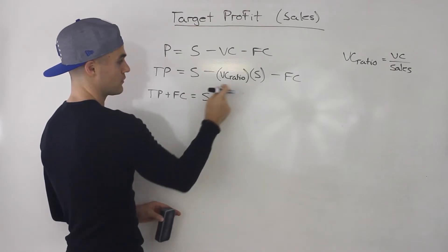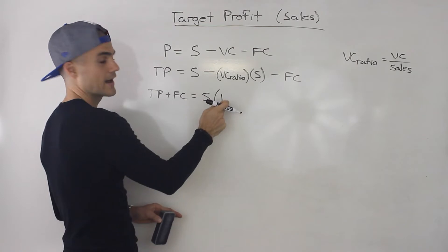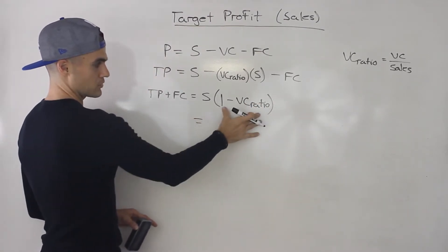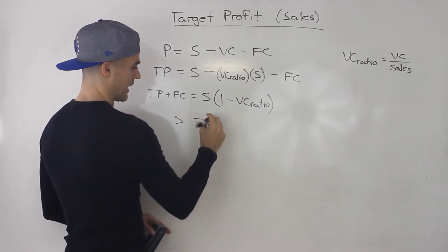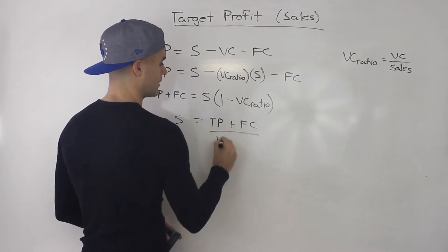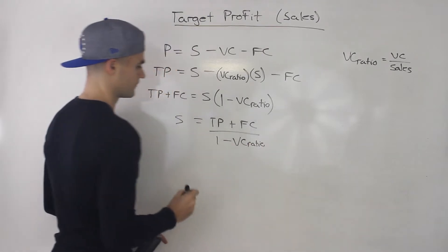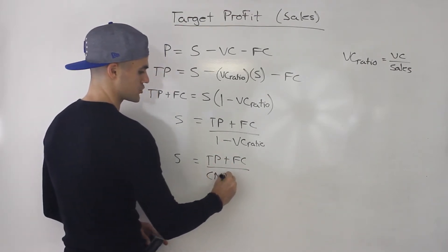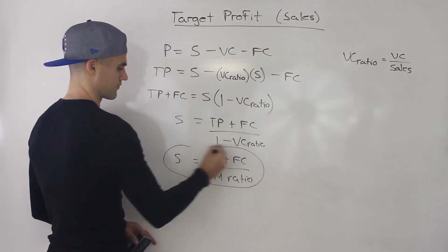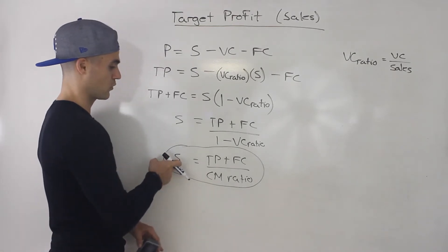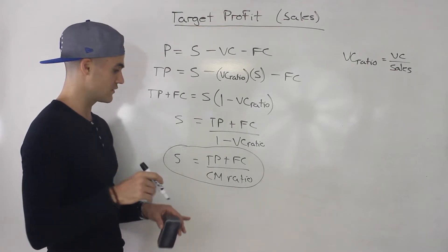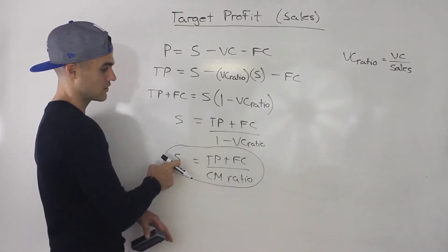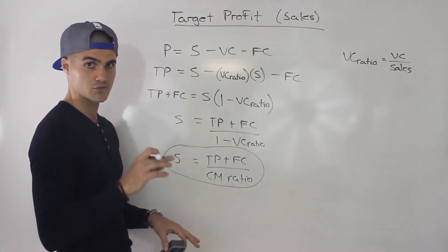That equals sales minus variable cost ratio times the sales. Notice we could factor out an S from both of these, and we'd be left with one minus the variable cost ratio from that expression. Then dividing both sides by that bracket in order to isolate for S, we would have the target profit plus the fixed costs over one minus the variable cost ratio. And the one minus the variable cost ratio is also the contribution margin ratio. So that is the formula for the target sales in order to achieve a certain target profit. When finding the number of units, it's the same numerator, but the denominator was the unit contribution margin. But when finding the target sales, the denominator is the contribution margin ratio.